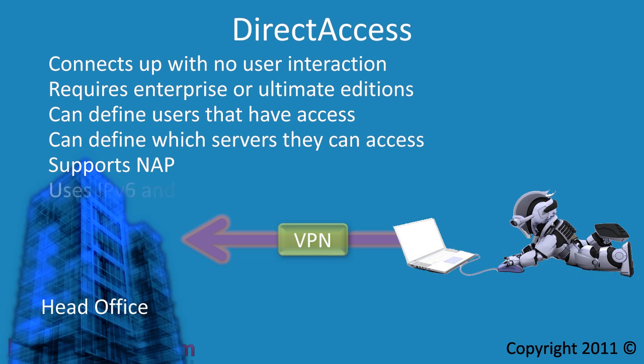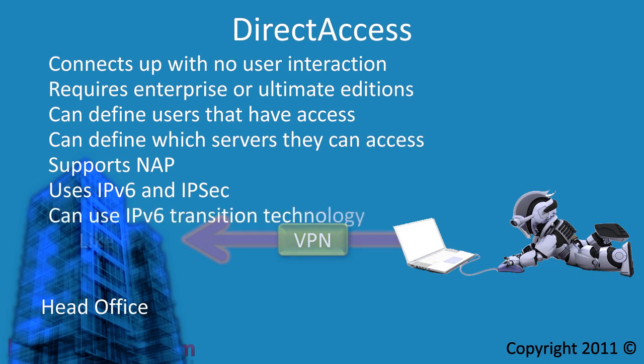Direct access requires IP version 6 and IPsec to run. Even though IP version 6 support is improving, a lot of networks still don't support IP version 6. To get around this, direct access supports IP version 6 transition technology.